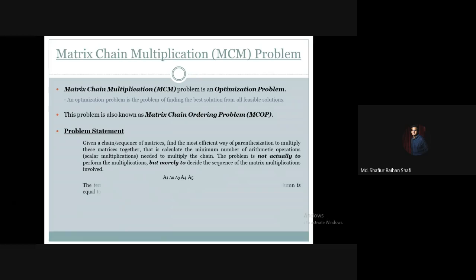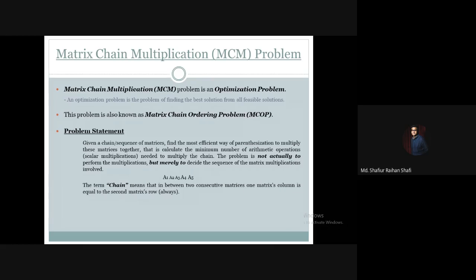The term 'chain' means that between two consecutive matrices, the first matrix's number of columns must equal the second matrix's number of rows — otherwise multiplying them would not be possible.